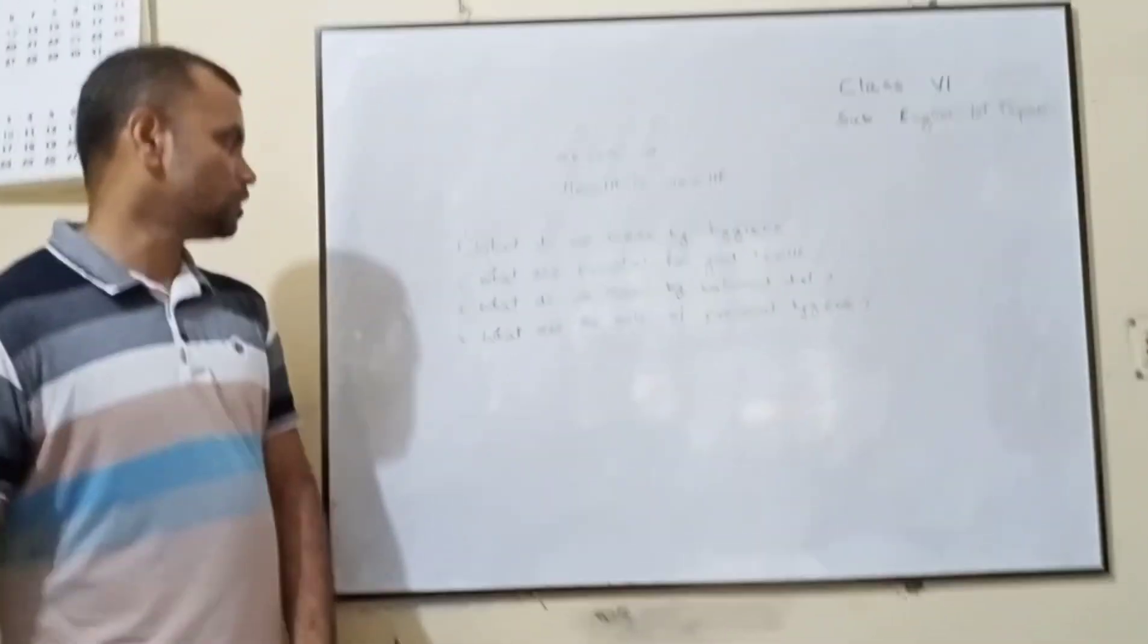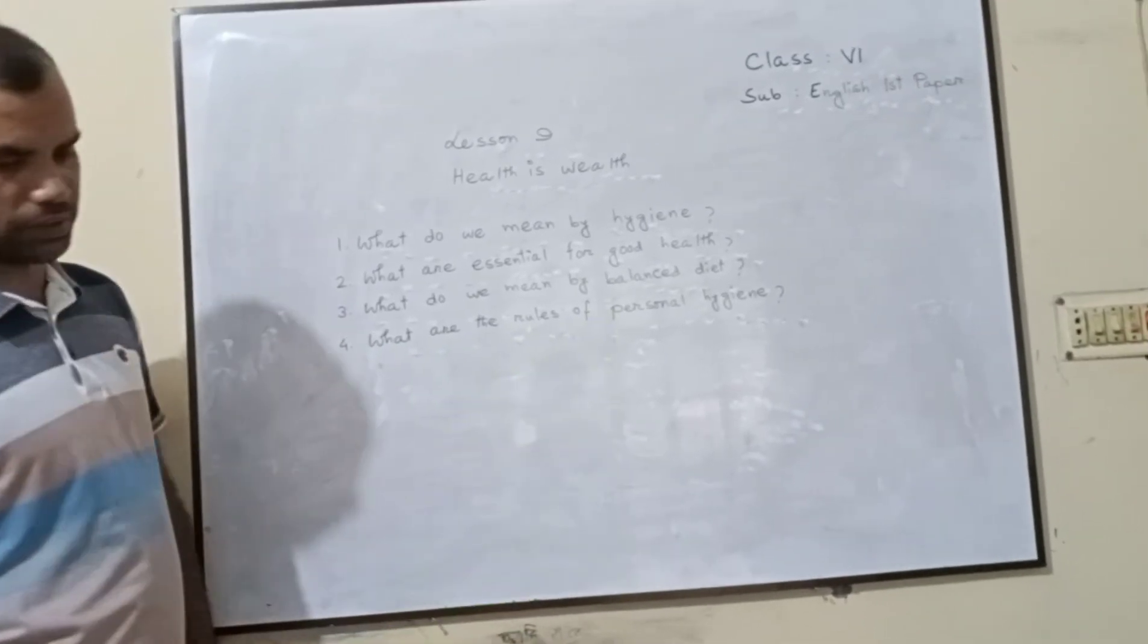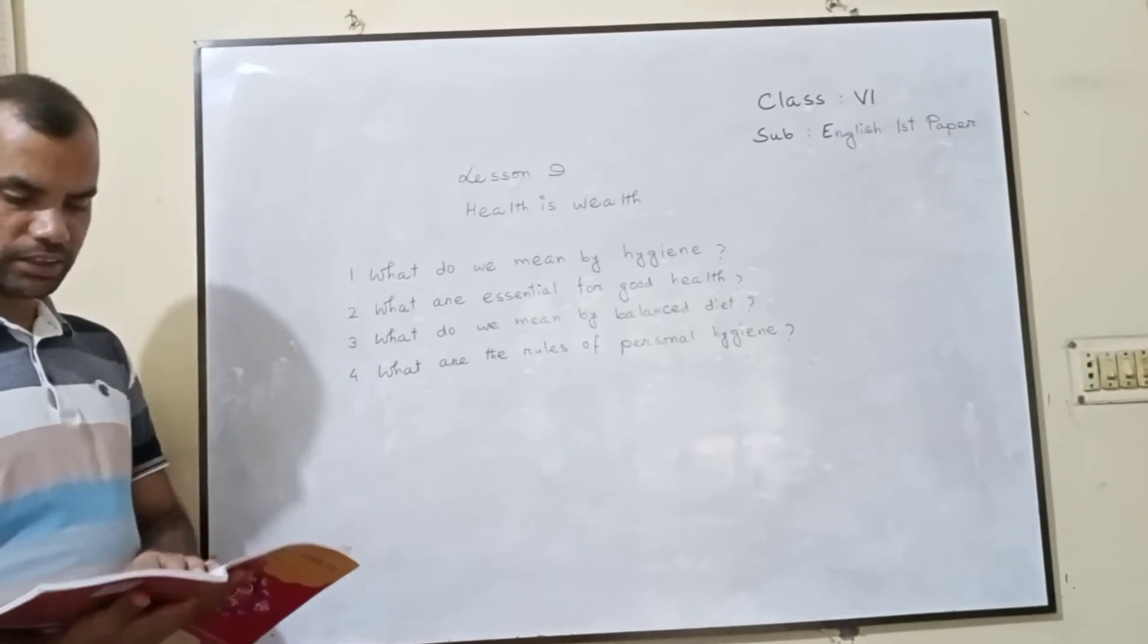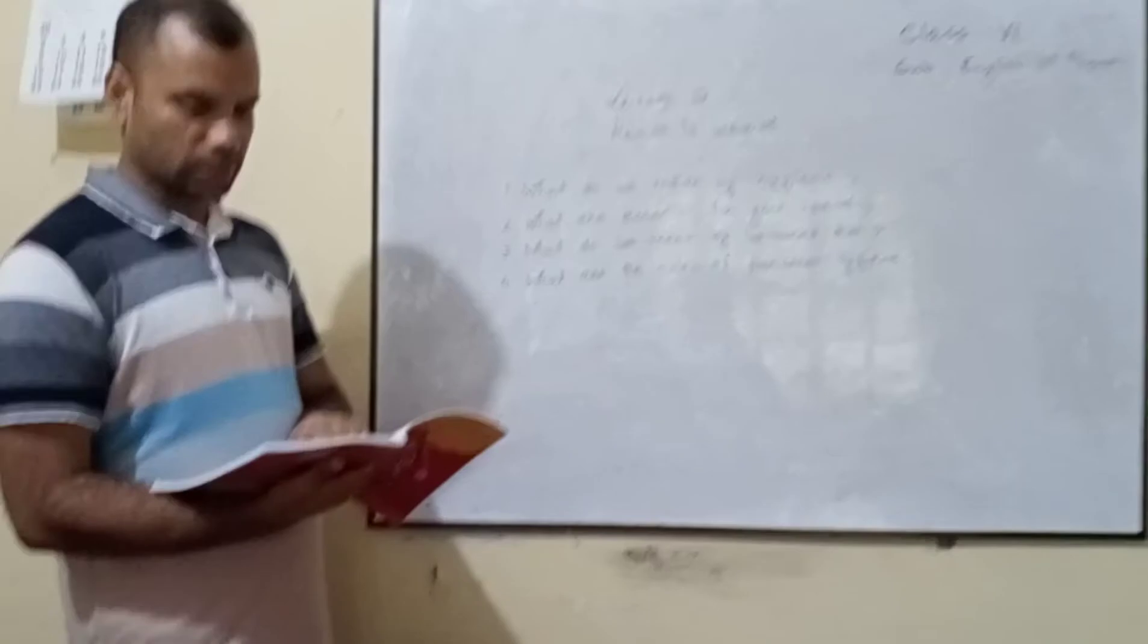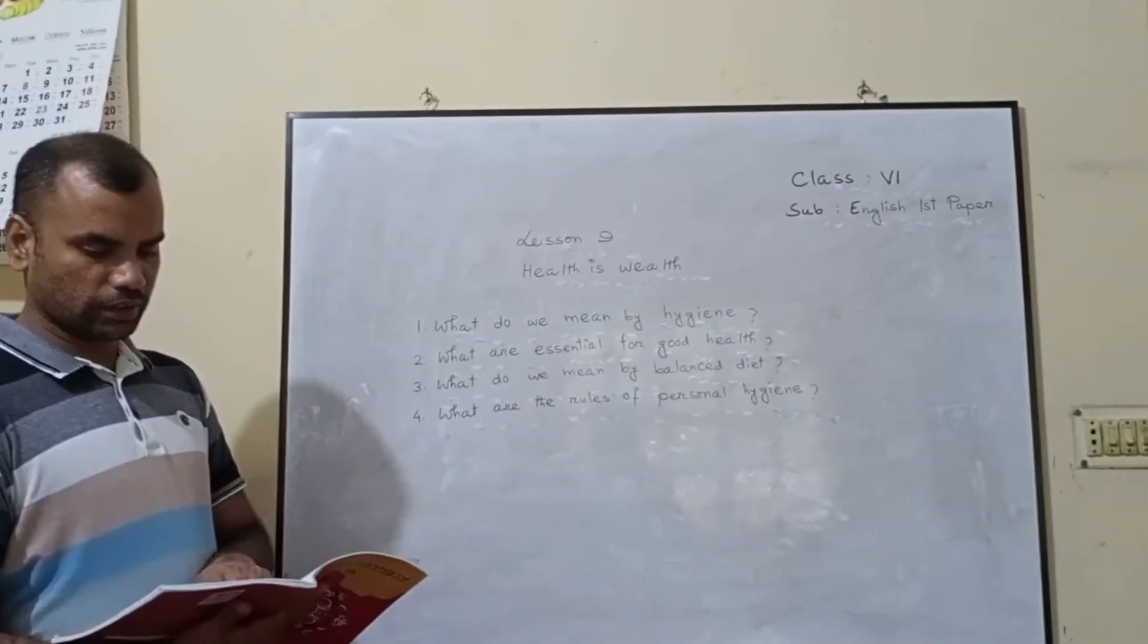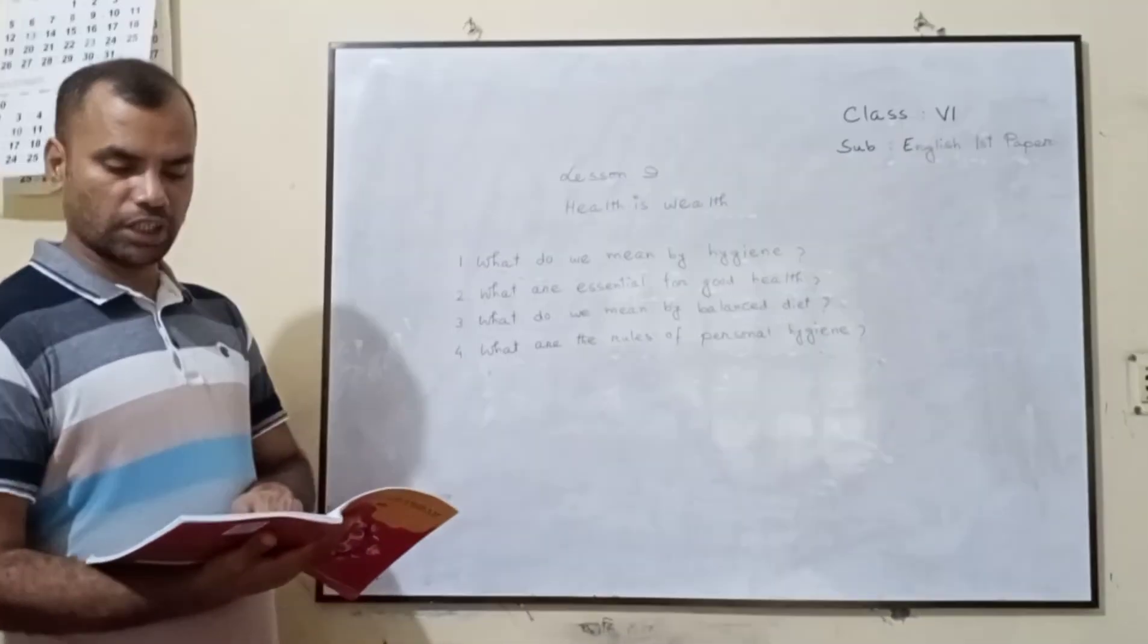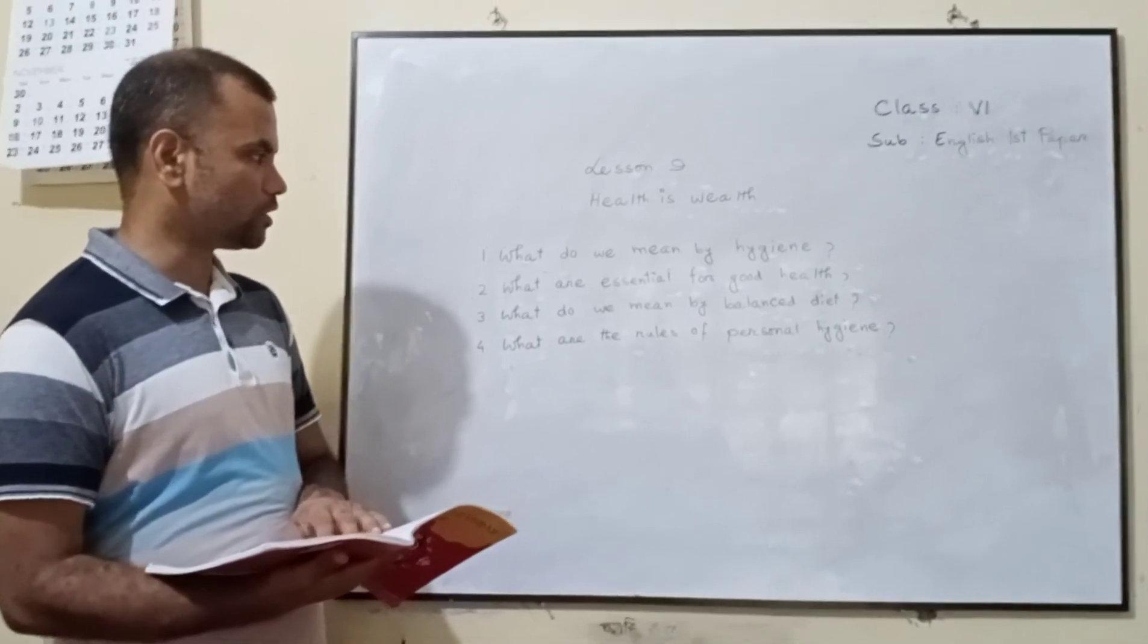And number four, dear students will see, what are the rules of personal hygiene? So, there are some rules of personal hygiene. They are washing our hands before eating, bathing regularly and wearing clean clothes, brushing our teeth twice regularly, washing our feet and hands before going to bed. So, this is the answer of our fourth question.